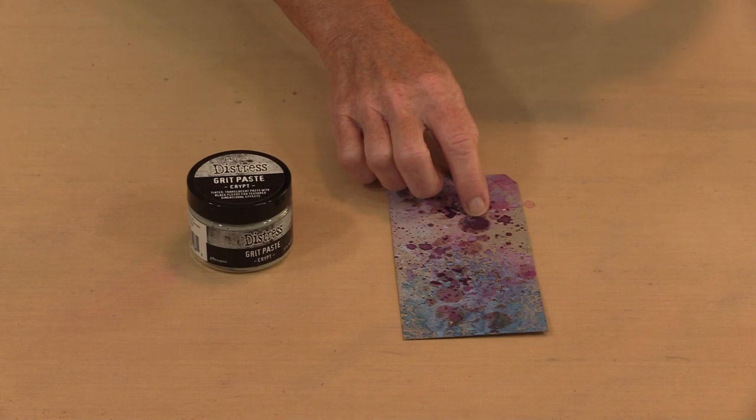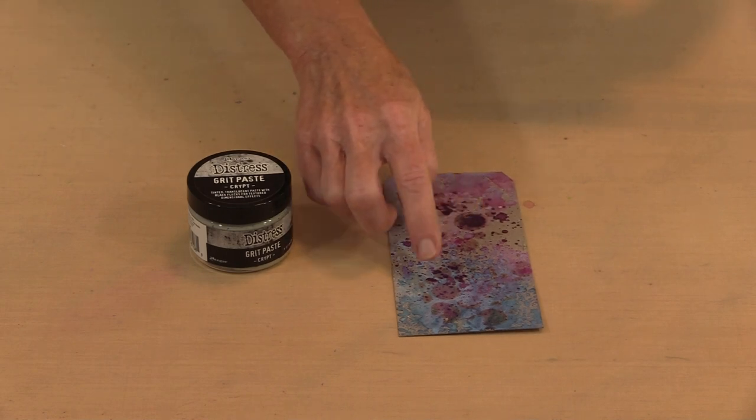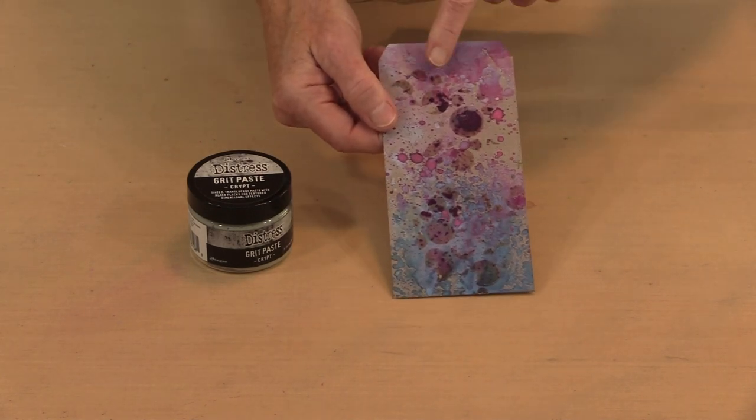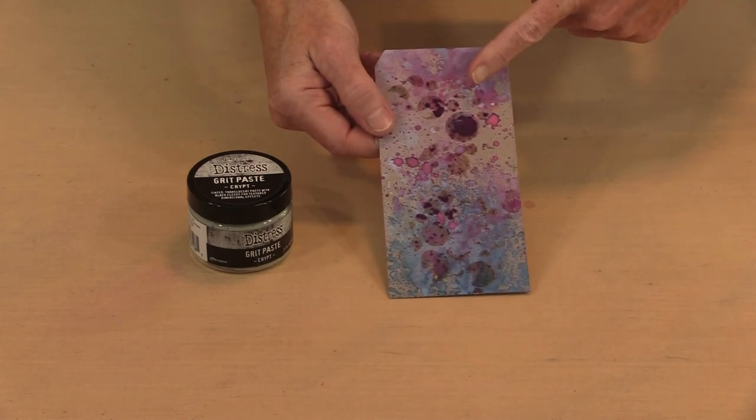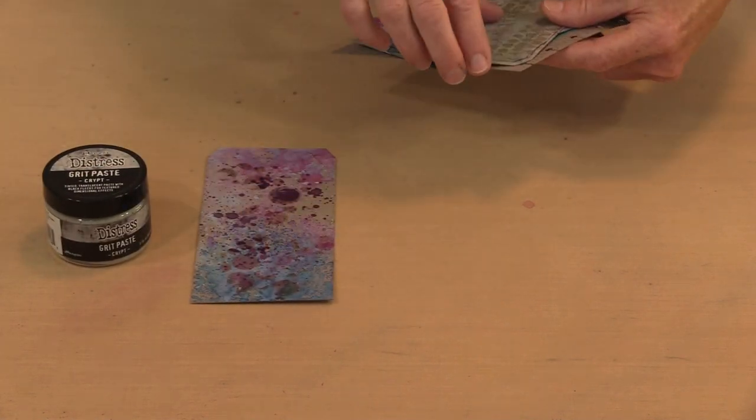Now this one looks a little less like grit paste, but if I hold this up, you can really see it. But what happened here, I used some of the new Halloween 2022 mica stains, that's what you see coloring the grit paste. If I hold this up, you can see that the color that's underneath has been picked up because, of course, Distress reactivates.